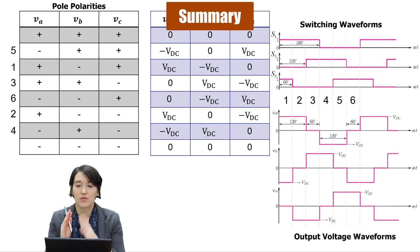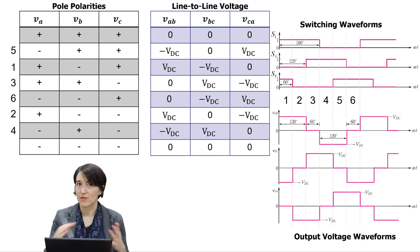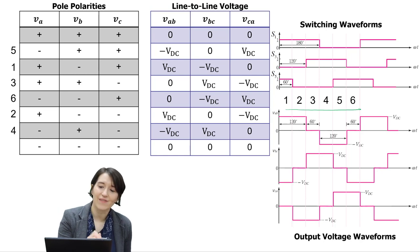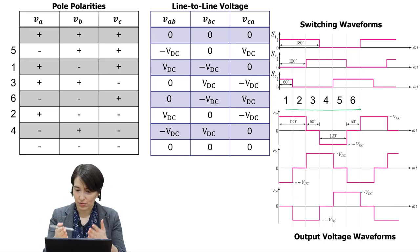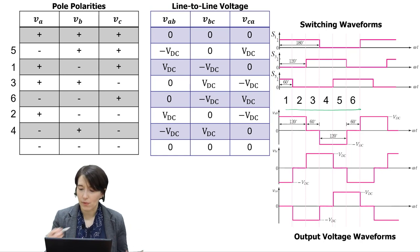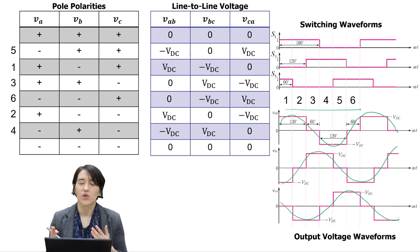To summarize: given this switching waveform where each switch is on for 50% of the time but phase shifted by 120 degrees — evenly balanced across the 360-degree period — we can divide that into six different operating modes. We can map those back to the pole polarities, then to the line-to-line and line-to-neutral voltages. The output voltage for each line-to-line pair is approximately sinusoidal, all shifted by 120 degrees, giving a balanced output voltage to the three-phase load.